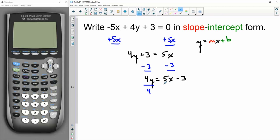And then I'm going to divide both sides by 4, and I'll have this thing in slope-intercept form. It's going to be y equals 5/4 x minus 3/4.